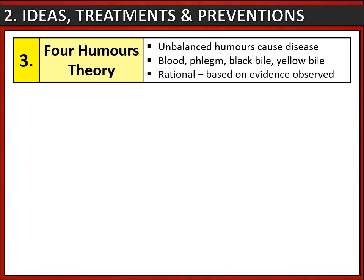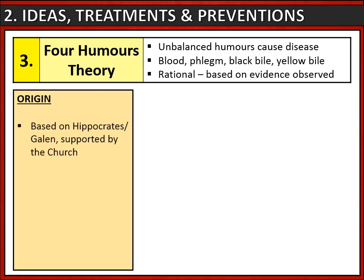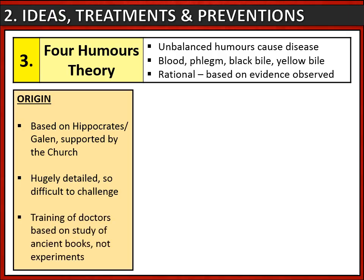Another key idea at the time was the four humours theory — the idea that the body contained four liquids called humours: blood, phlegm, black bile and yellow bile. If these humours became out of balance, the patient might get sick. This was different to the previous two ideas because it was rational — not based on God or superstition, but on evidence doctors could see with their own eyes. For example, if the patient had a runny nose, doctors could see the patient had too much phlegm. It was based on the writings of Hippocrates and Galen, which were supported by the church, and their work was so detailed it was difficult for anybody to challenge it. The training of doctors was based on the study of these ancient books and not on experiments, so doctors didn't really have the opportunity to challenge Hippocrates or Galen's ideas.